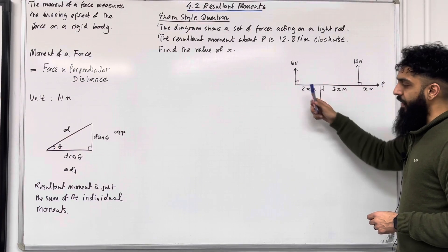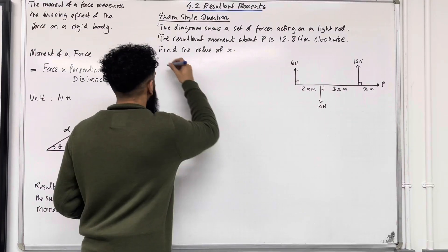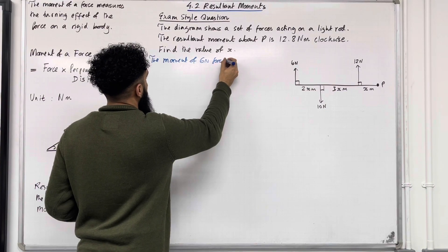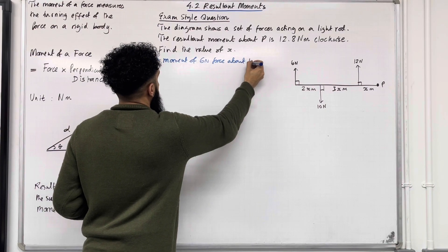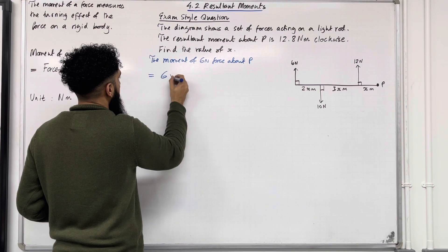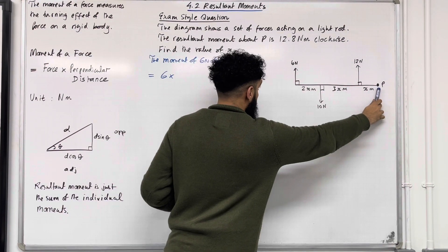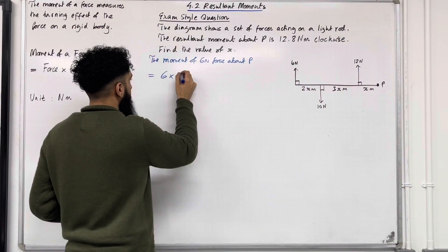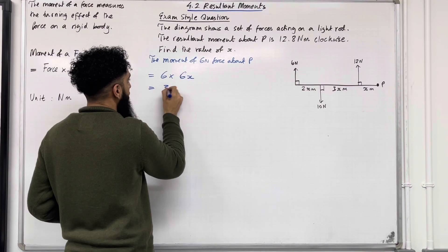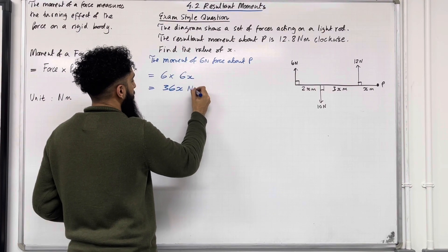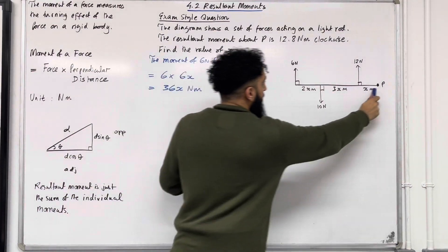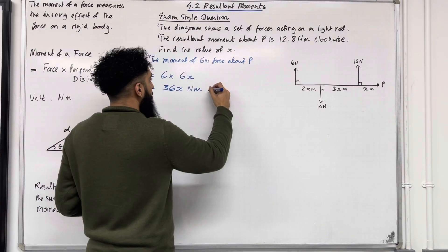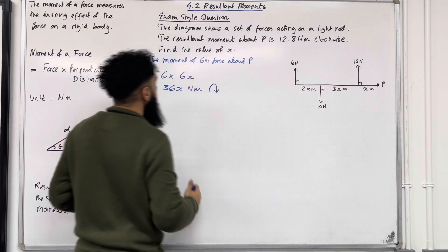Starting with the moment of the 6 newton force about P: this equals 6 multiplied by the perpendicular distance from P, which is x plus 3x plus 2x, giving 6x. So 6 times 6x is 36x Newton meters. If I hold on to point P and apply this force, it takes the entire body clockwise. So we have 36x Newton meters going clockwise.